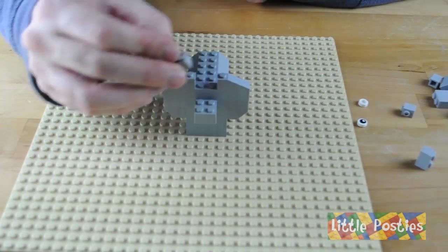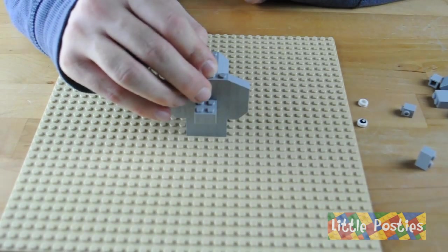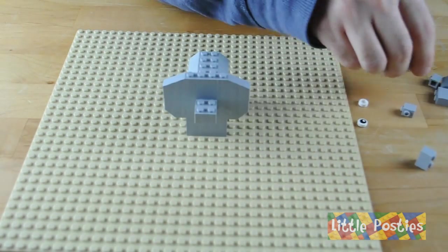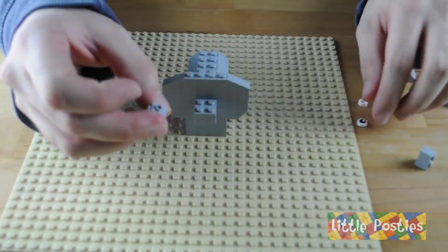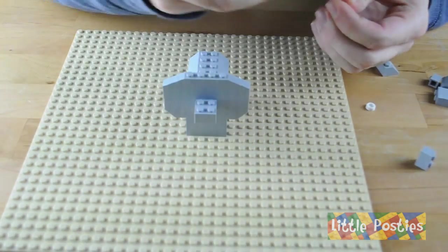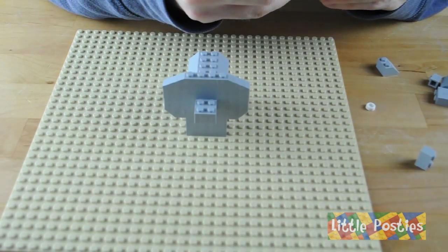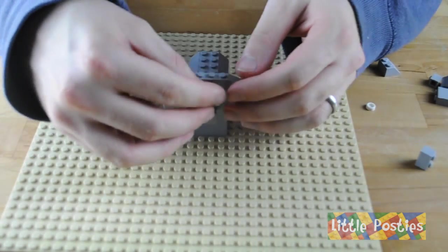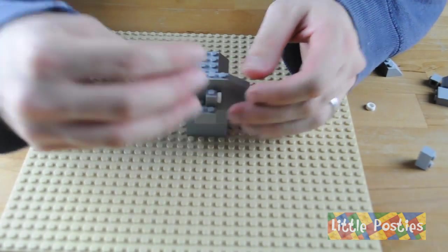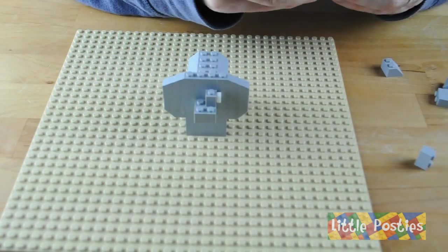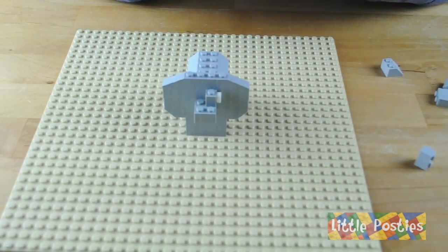We've then got the 1x2. We're going to take the modified brick and pop the eye on. Do the same on the other side.